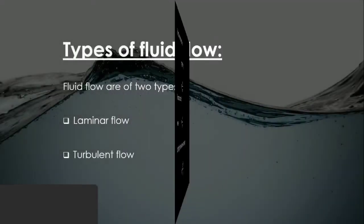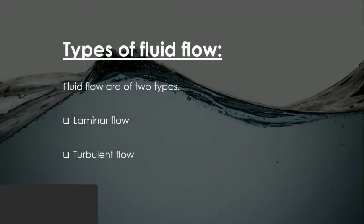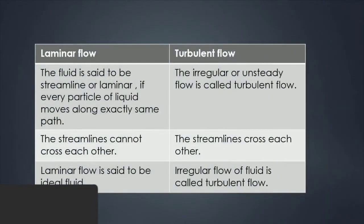Types of fluid flow. Fluid flows are of two types: laminar flow and turbulent flow. Laminar flow: the fluid is said to be streamline or laminar if every particle of liquid moves along exactly the same path. The streamlines cannot cross each other. Laminar flow is said to be ideal fluid.